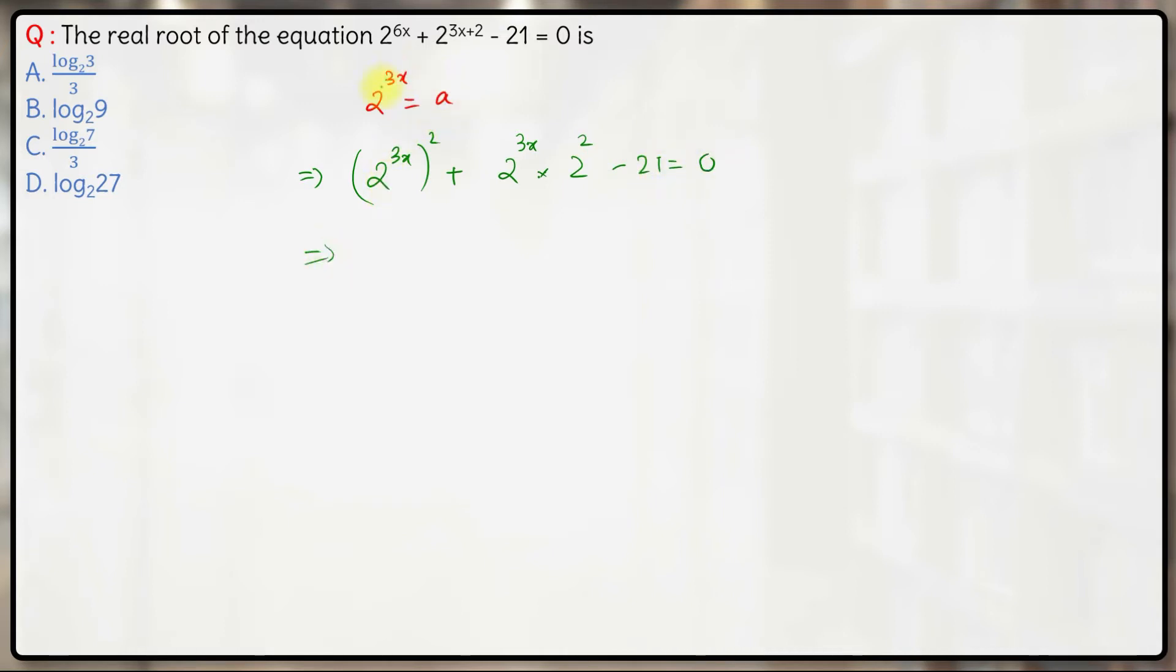2 raised to the power 3x we just assumed is a, so this is a square plus 4a minus 21 is 0. Once we factorize this, we'll get a plus 7 into a minus 3 is equal to 0.